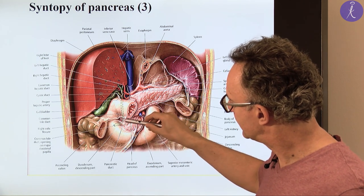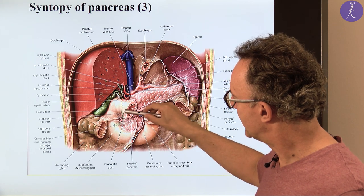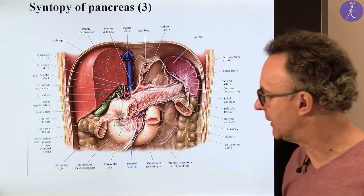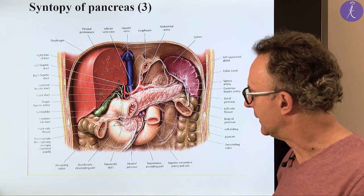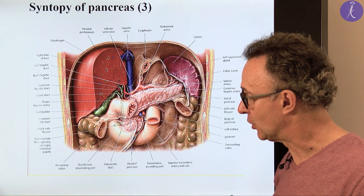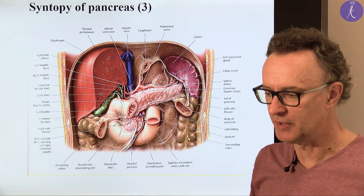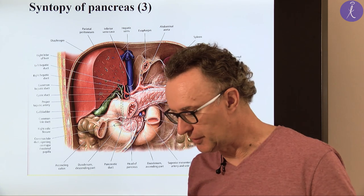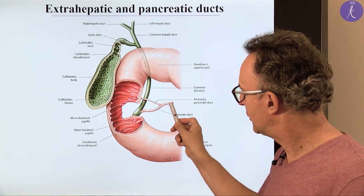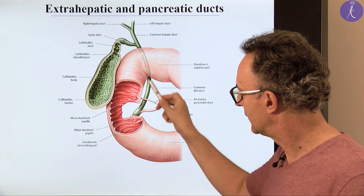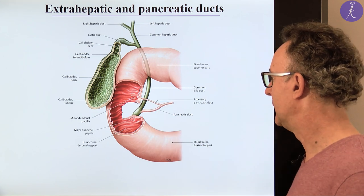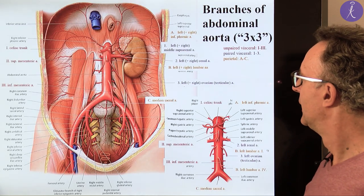If something compresses the common bile duct — for example, cancer in the head of pancreas — bile backs up, increasing pressure in the intrahepatic duct system and ultimately in the bile capillaries, destroying the tight junctions. Since the bile capillaries are very close to the sinusoids which have a fenestrated wall, bile can enter the circulation — and that's why we have jaundice. These are the two papillae: the major and minor duodenal papillae.